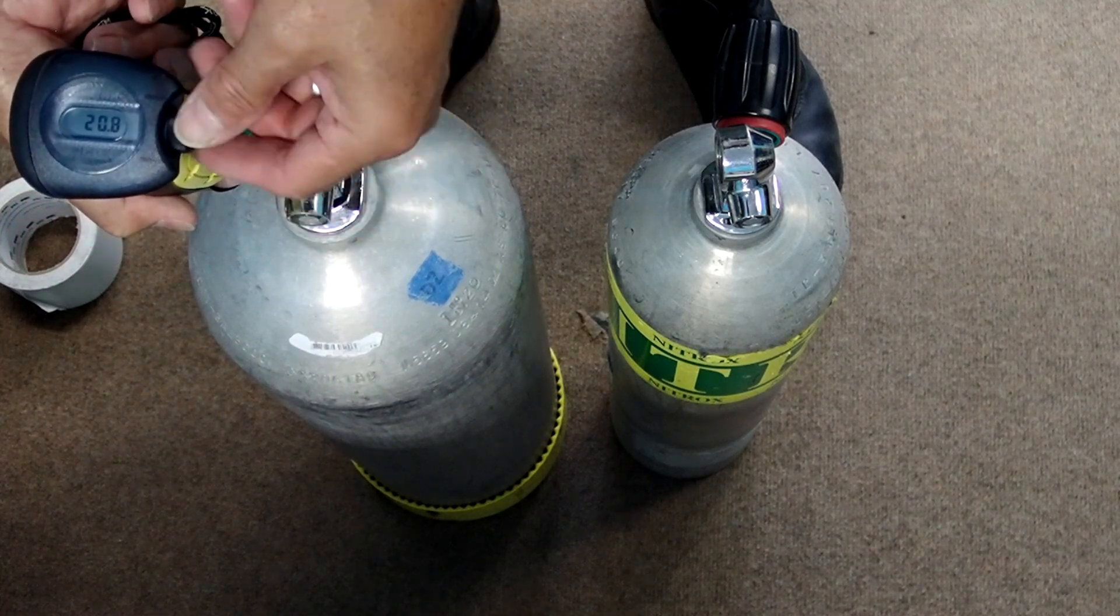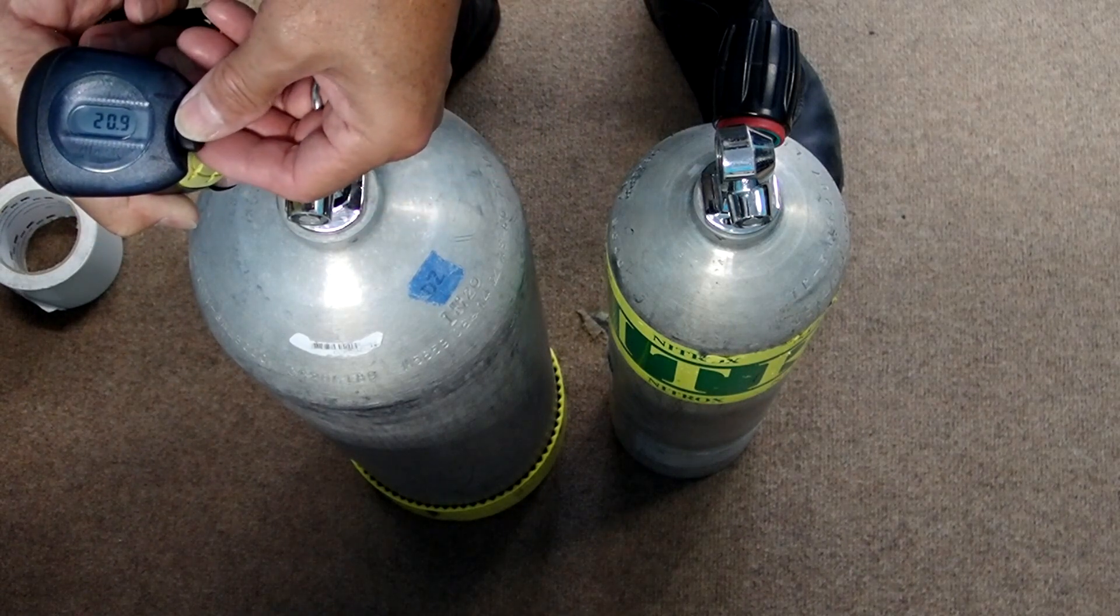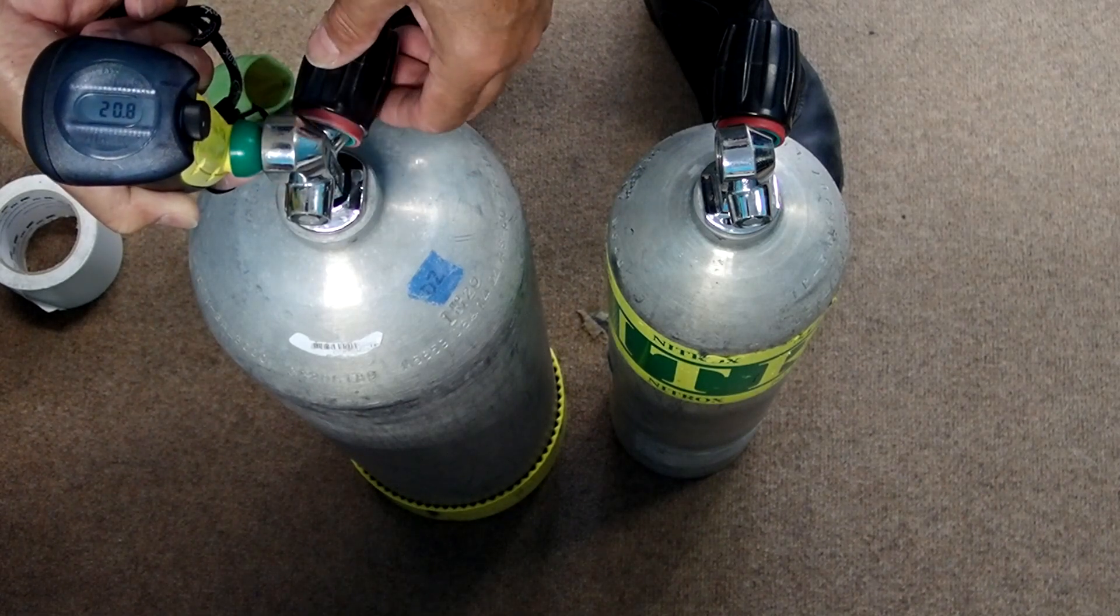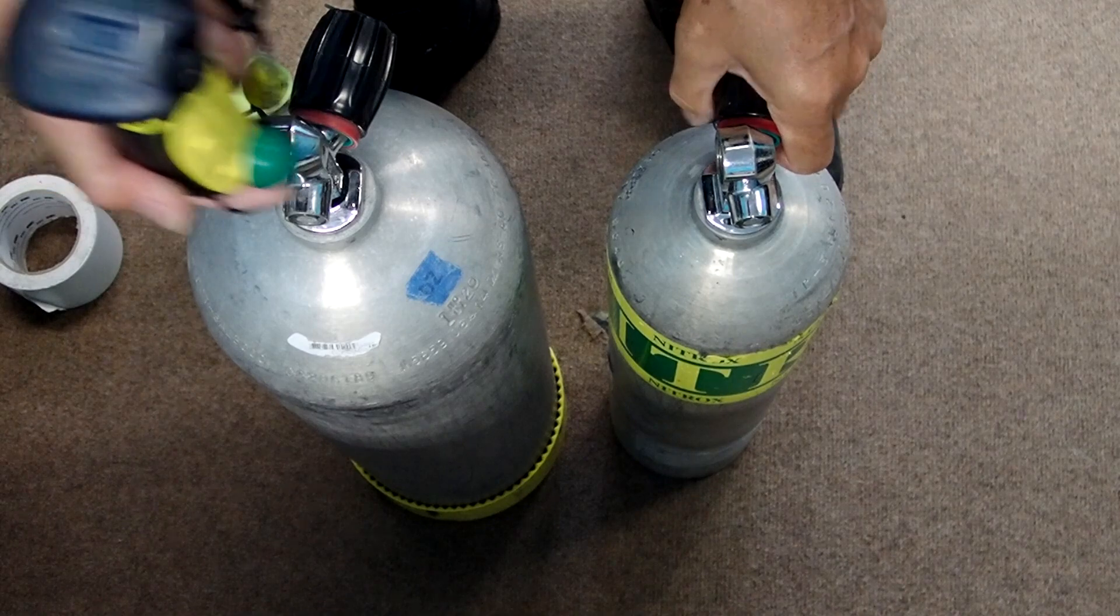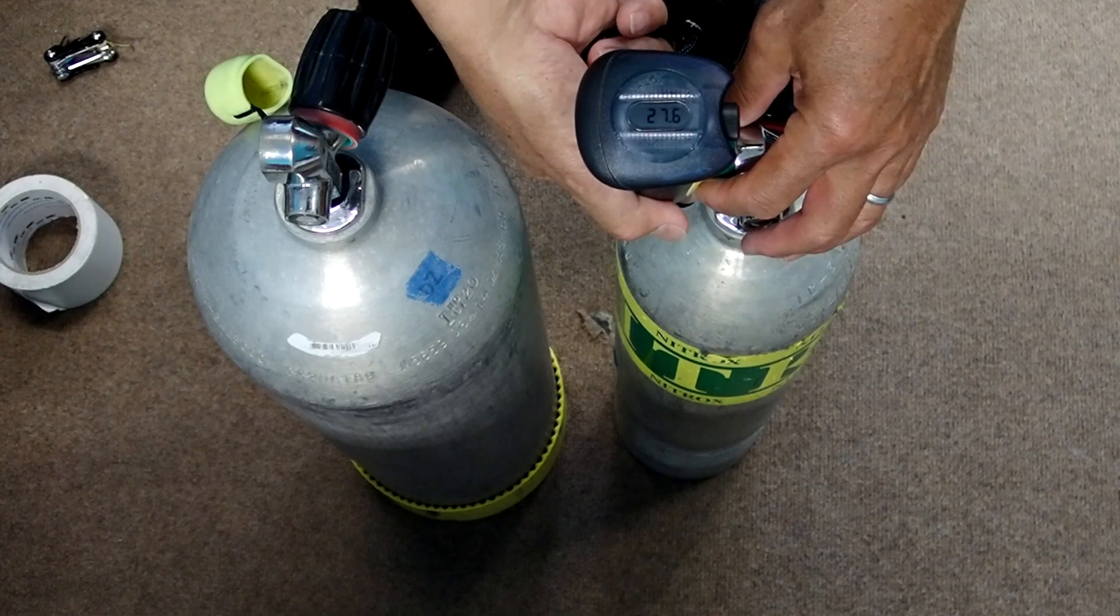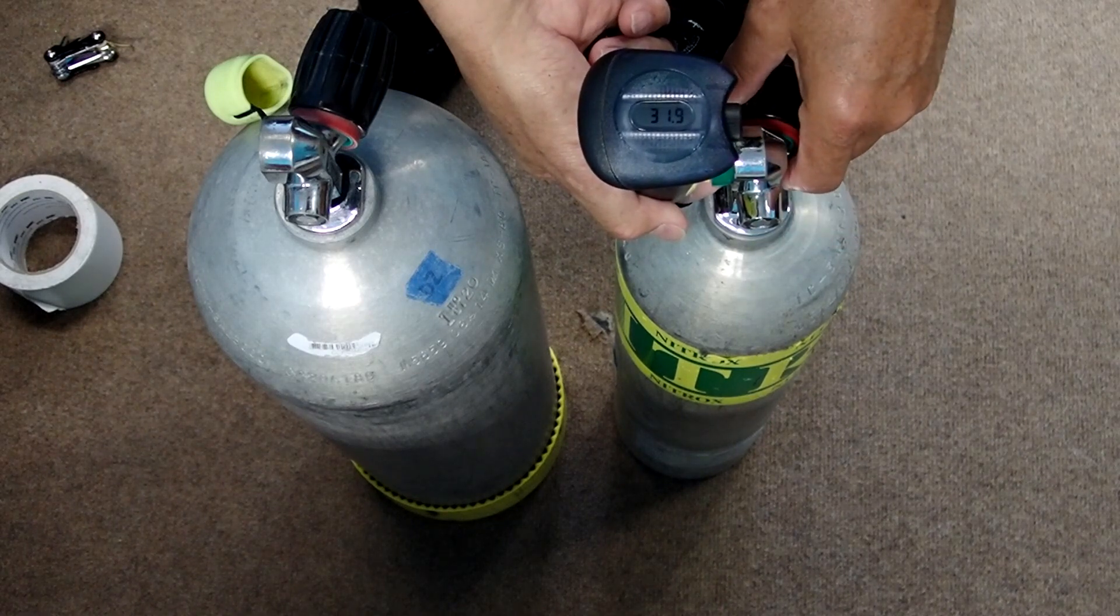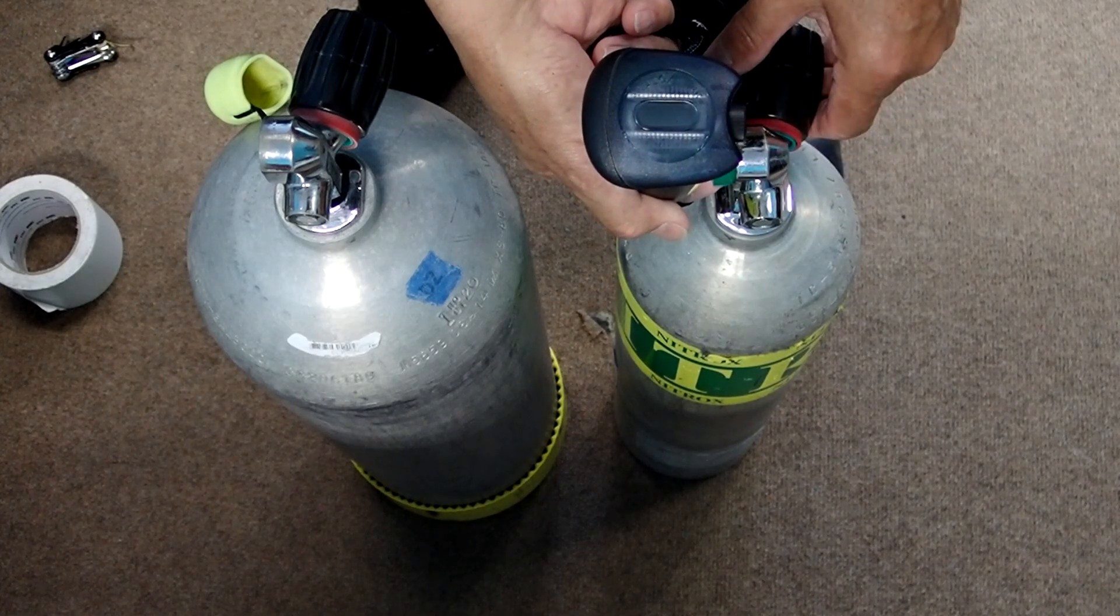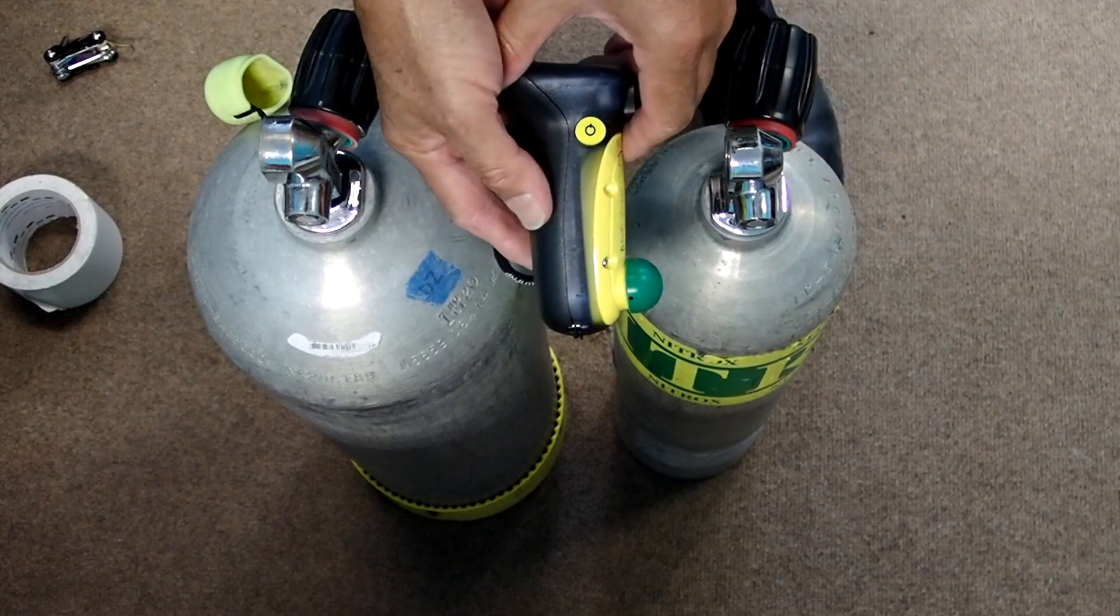We're going to stick this up here and make sure that this is 20.8. There we go. And it's now calibrated. Now we're going to go to our deco tank with unknown gas mix. We're going to get the same level flow and put it up there and see what we get. We're getting 32 for our reading. So 32%, that's the process with the Analox analyzer.